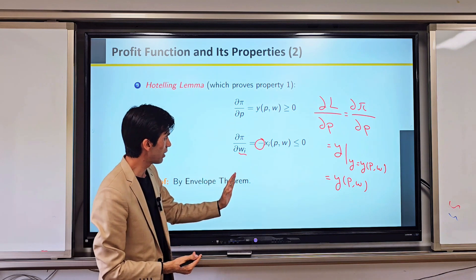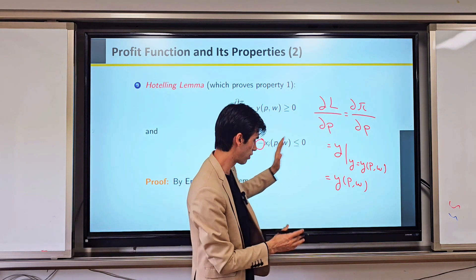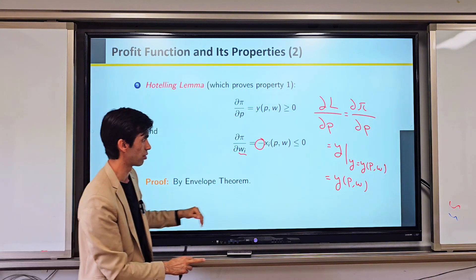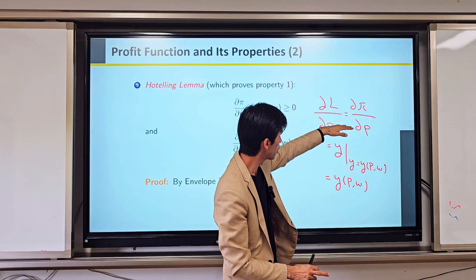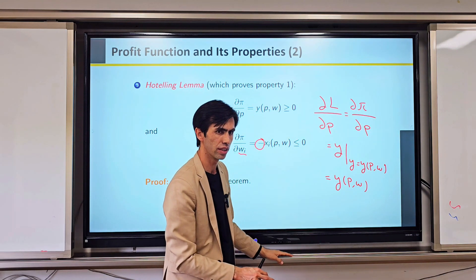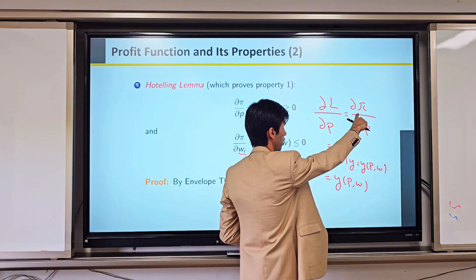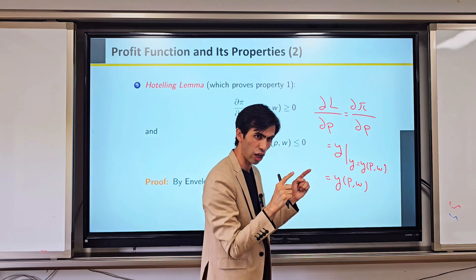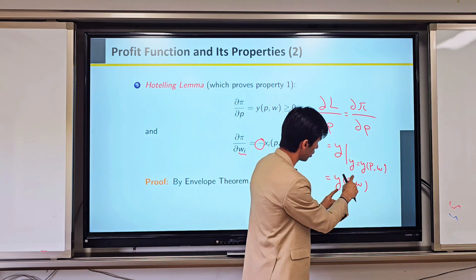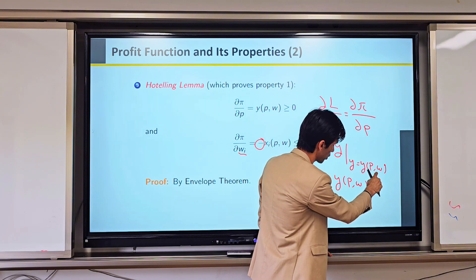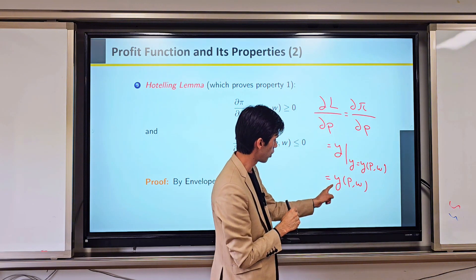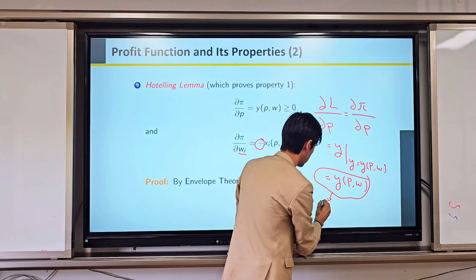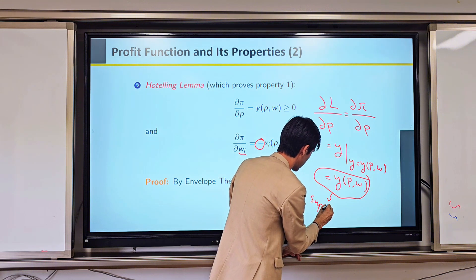Simply, when we take the partial derivative of the Lagrangian with respect to price, it is equal to the partial derivative of profit with respect to price. As a result, we get our Y — our output value — as a function of output and input prices, giving us Y = f(P, W).